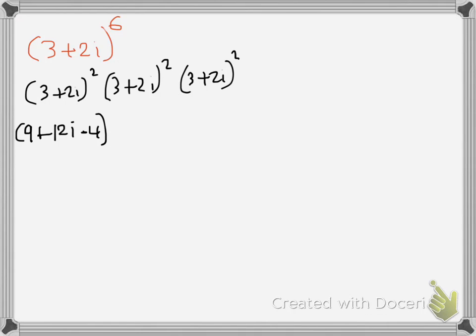And then I will simplify this one here and I will have 9 minus 4, so it is 5, so it is 5 plus 12i. And then the rest will be exactly the same.